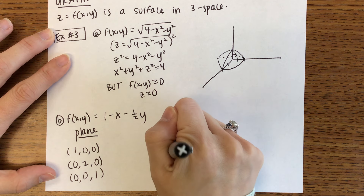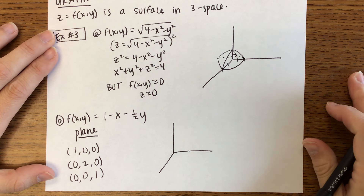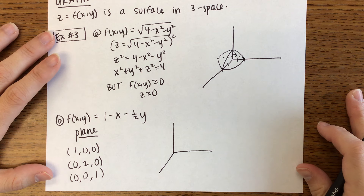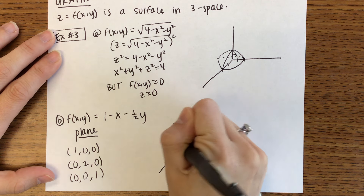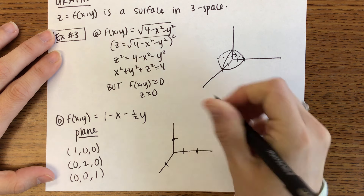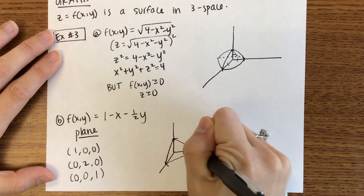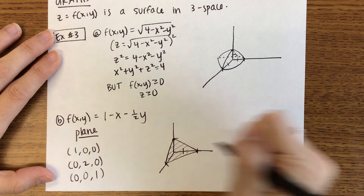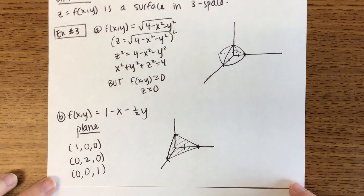Have you guys graphed planes before? This is generally what we do: plot those three intercepts and then sketch out a triangle. Obviously the plane continues beyond that, but that gives the position of the plane.